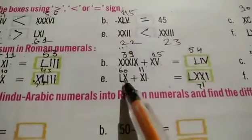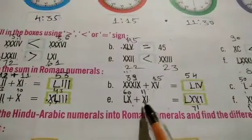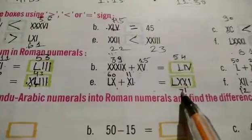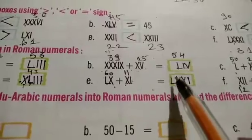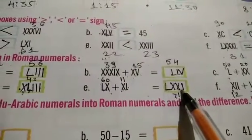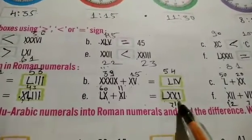So we have 60, 10 and 1 is 11. So 60 plus 11 is 71. And we will write 71 as 50 plus 10 plus 10 plus 10 is 20. And 1 is 71.